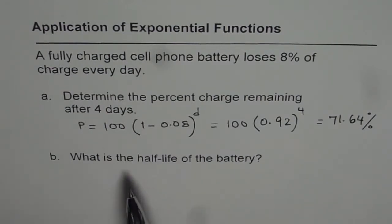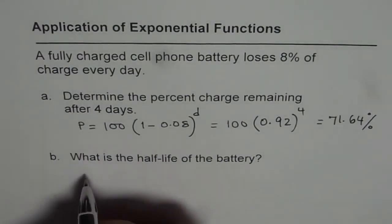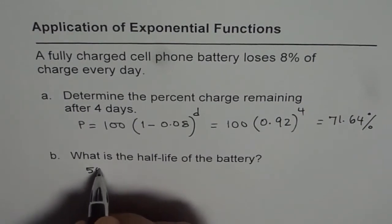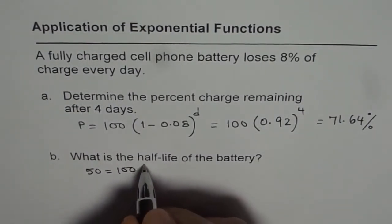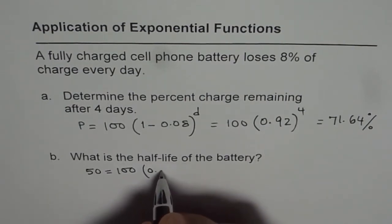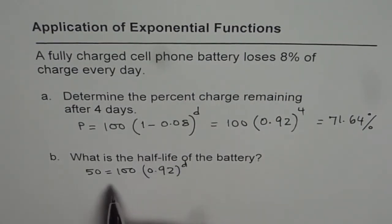The second part of the question is, what is the half-life of the battery? Half-life means that the charge left will be 50% of what we started with. We can use this formula: instead of P, we will write 50%, that is 50 of 100. And the formula is 0.92 to the power of D. Here we need to find what D is.